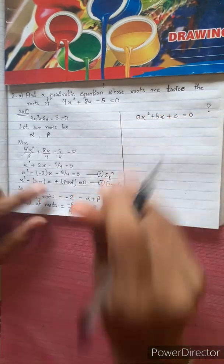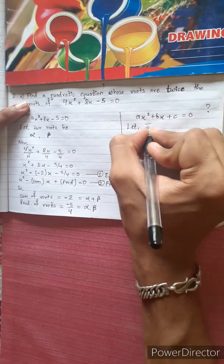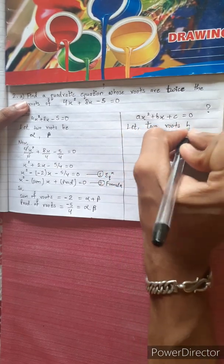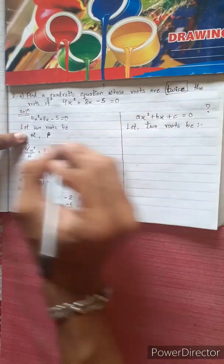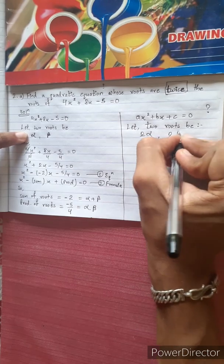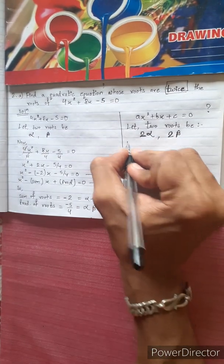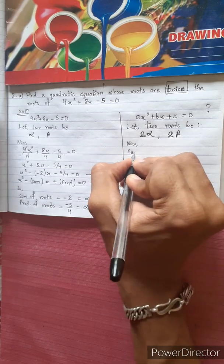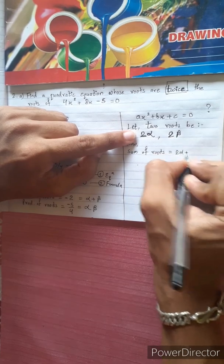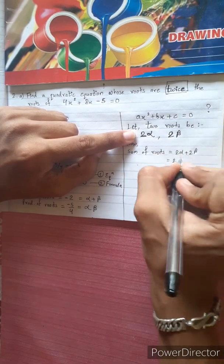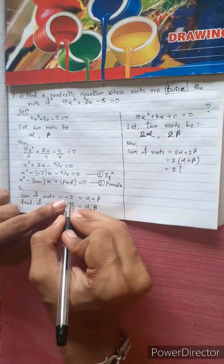We need the equation whose roots are twice the roots of this equation. Let the two new roots be 2 alpha and 2 beta. Sum of the new roots: 2 alpha plus 2 beta equals 2 times (alpha plus beta) equals 2 times minus 2 equals minus 4.